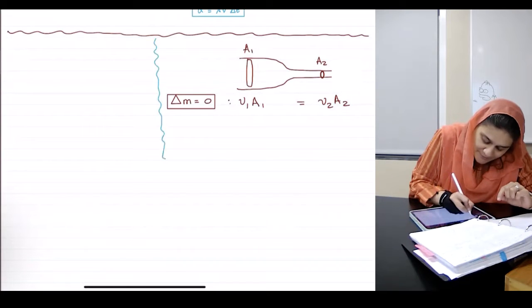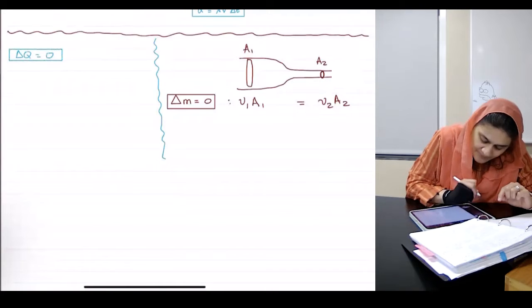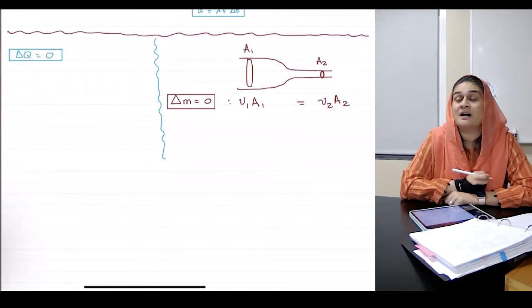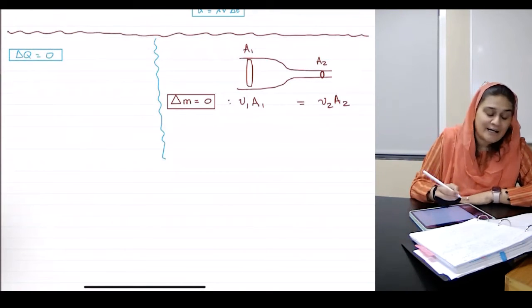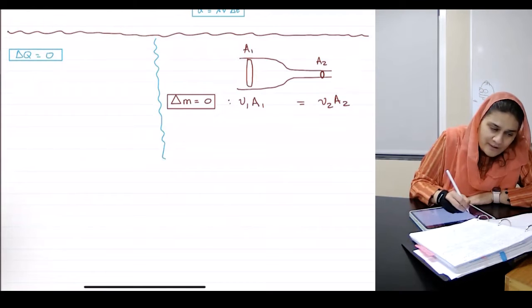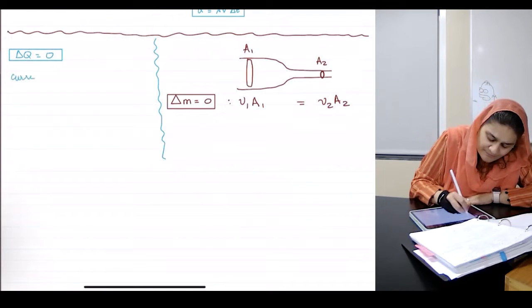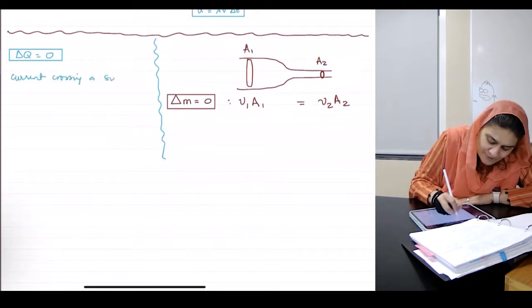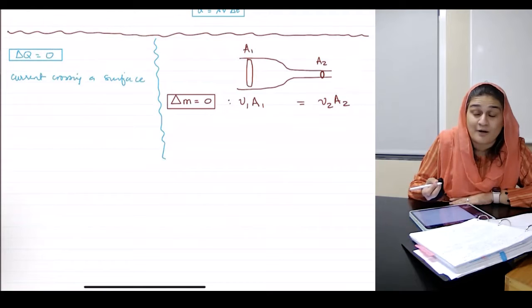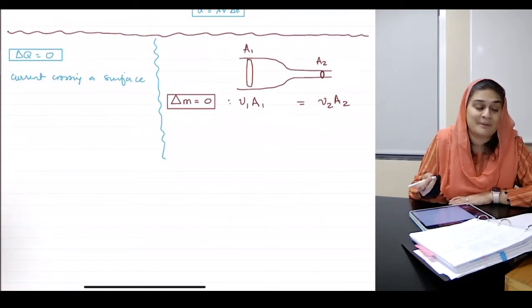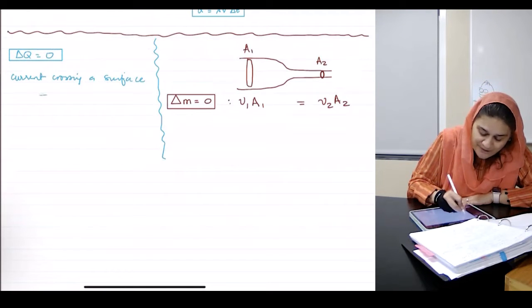So starting from the same, that's called conservation of charge. And I know current crossing a surface, any surface, any volume, the most general method of writing it.